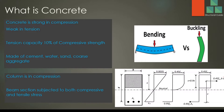Concrete is strong in compression and weak in tension. Generally, the compressive strength of concrete is high, but tensile strength is a little lower. As a general norm, the tensile strength is about 10% of its compressive strength. So the tensile capacity of concrete is very small when compared to its compressive strength.